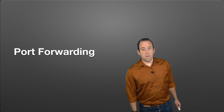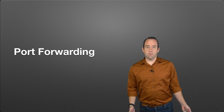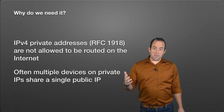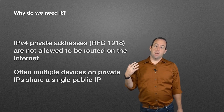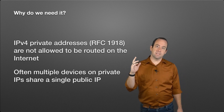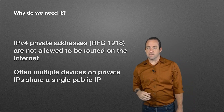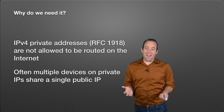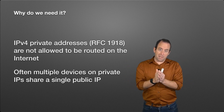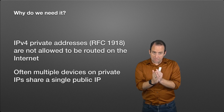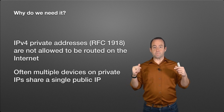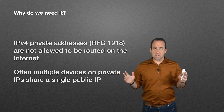Let's talk about port forwarding — what is it, why do we need it, what's it for, and when is it useful? We need it because private IPv4 addresses, also known as RFC 1918 IP addresses, are not allowed to be routed on the public internet. That's the 10.x.x.x addresses, the 192.168.x.x, the 172.16 to 31 ranges. Networks are typically set up with a single public IP address on a router and a bunch of devices with private IP addresses behind it.